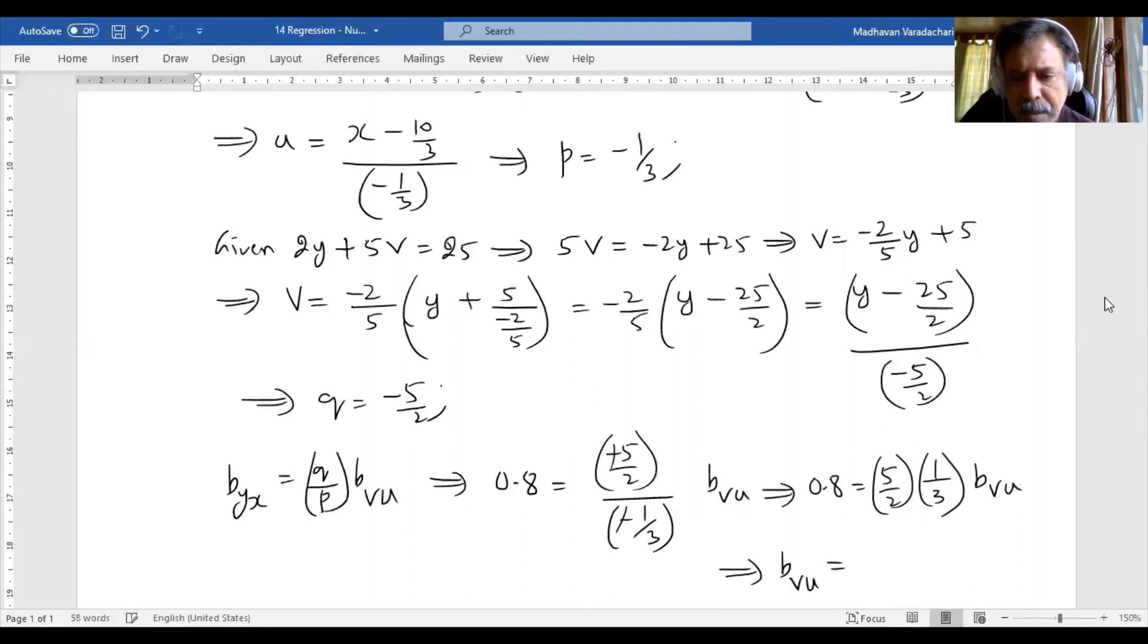will be 0.8 multiplied by—wait, 3 into 6 divided by 5, so it works out to 6 into 0.8 divided by 5.